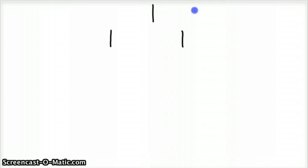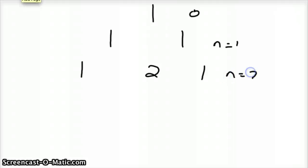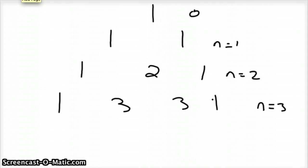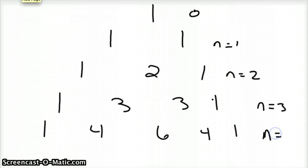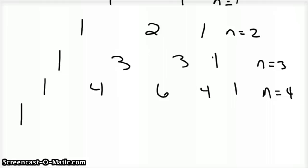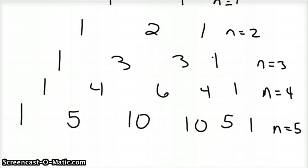Pascal's triangle, fifth row. Flipping zero coins: just one. Flipping one coin: one, one. Flipping two coins: one, two, one. Flipping three coins: one, three, three, one. Flipping four coins: one, four, six, four, one. And the row we're after — flipping five coins: one, five, ten, ten, five, one.